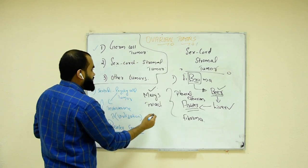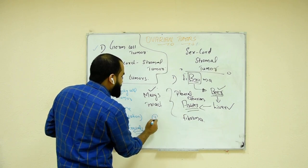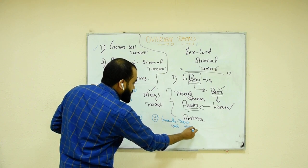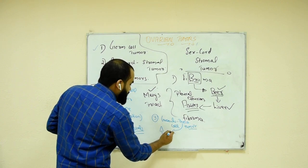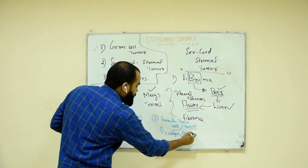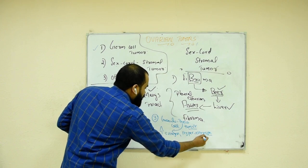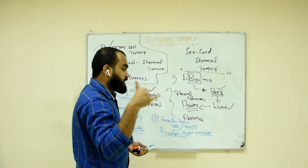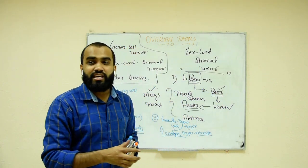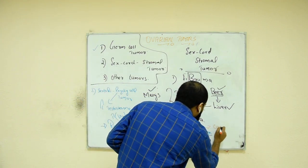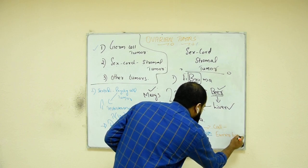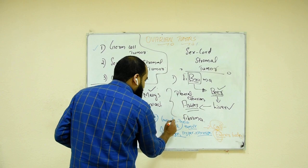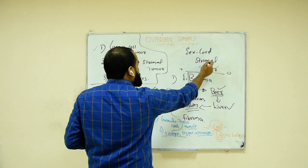The third sex cord stromal tumor is granulosa-theca cell tumor. Theca cells produce estrogen, so this patient will have hyperestrogenism. Histologically, you will see structures called Call-Exner bodies. Remember: more estrogen means the female starts 'calling her ex' — so Call-Exner bodies indicate granulosa-theca cell tumor.